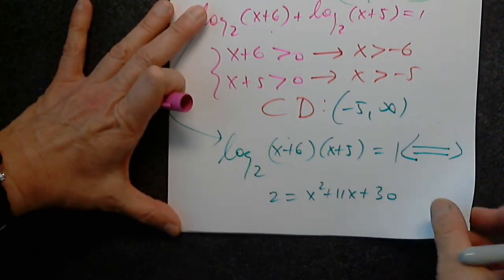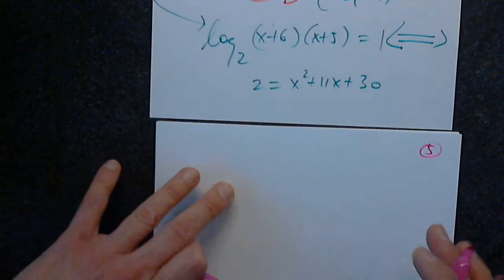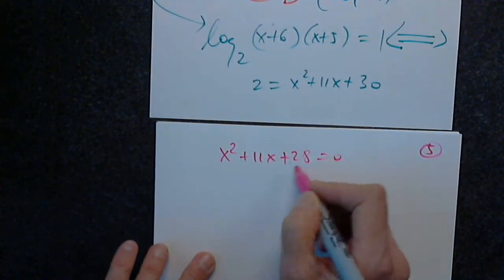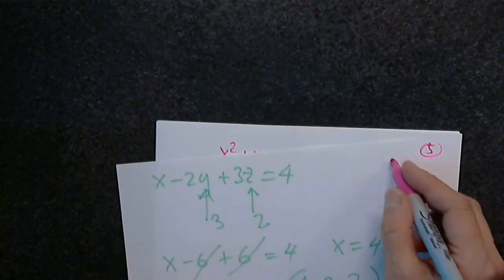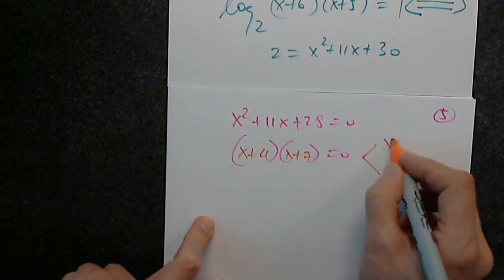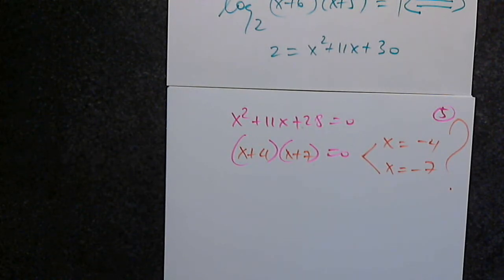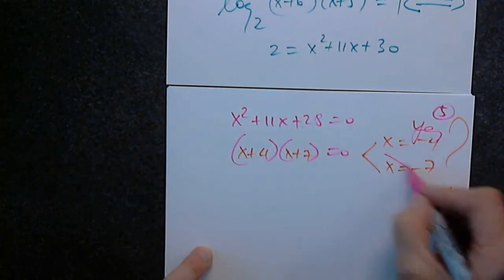This is quadratic, so we expect two solutions. We get x squared plus 11x plus 28 equals 0, which factors as x plus 4 times x plus 7. So x equals negative 4 or x equals negative 7. Checking the domain — negative 4 is greater than negative 5, so it's a yes. Negative 7 is less than negative 5, so it's a no. The only solution is x equals negative 4.